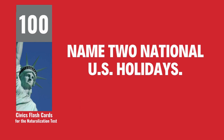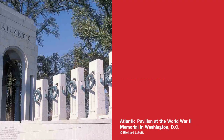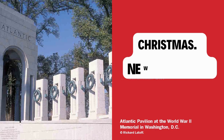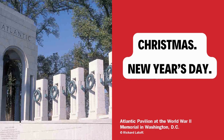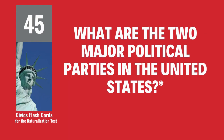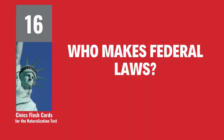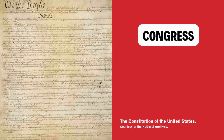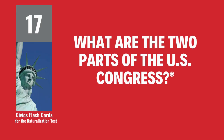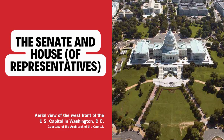Name two national U.S. holidays. Christmas. New Year's Day. What are the two major political parties in the United States? Democratic and Republican. Who makes federal laws? Congress. What are the two parts of the U.S. Congress? The Senate and House of Representatives.